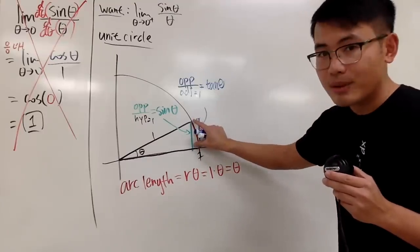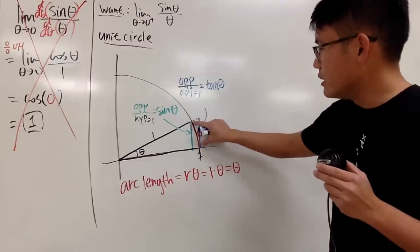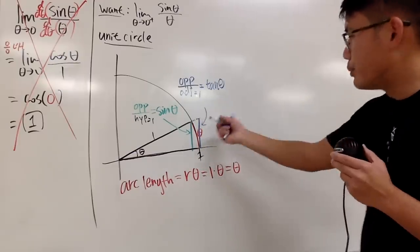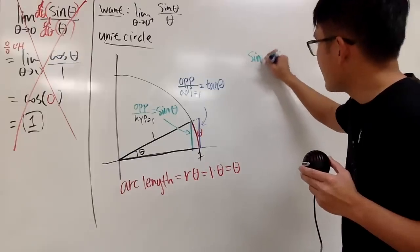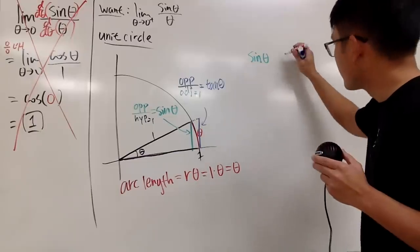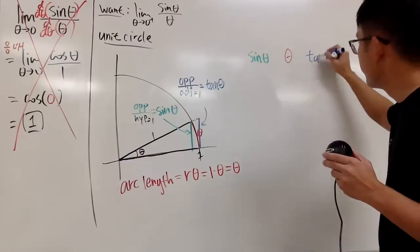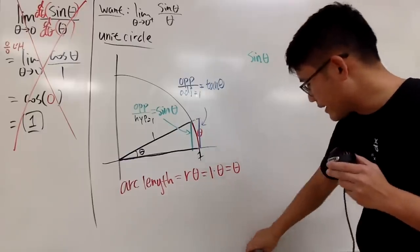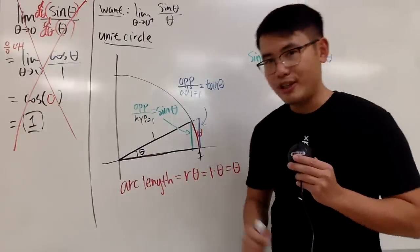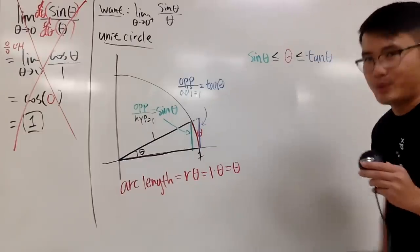Now we have three things to compare: the green length (sine theta), the red curve (arc length theta), and the blue length (tangent theta). Sine theta is the smallest, theta is in the middle, and tangent theta is the biggest. So we can put down the inequality: sine theta ≤ theta ≤ tangent theta. Since theta is approaching 0 plus, let me also include the equal signs — this is still true.